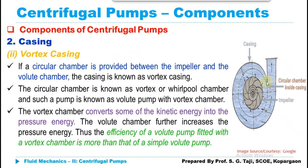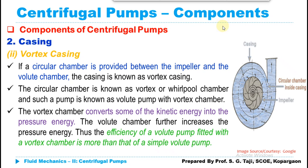The second type is the vortex casing, where a circular chamber is provided between the volute casing and the impeller. This vortex casing provides additional conversion of kinetic energy into pressure energy. Liquid coming out from the impeller first passes through the circular chamber — converting some kinetic energy to pressure energy — and then moves into the outer volute ring for further conversion. This double conversion improves efficiency and provides higher head at the outlet compared to a simple volute pump.